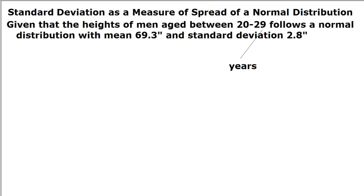So now that we know how to compute a standard deviation, which is a numerical measure of spread for a given set of numerical data, let's see how we can use it for a distribution that is a normal distribution. Let's take this example in which the heights of men aged between 20 to 29 years follows a normal distribution with mean of 69.3 inches and a standard deviation of 2.8 inches.